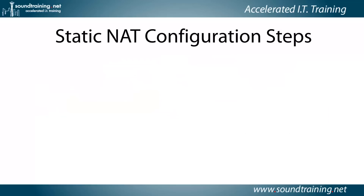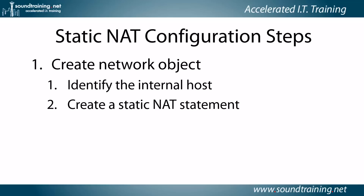There are three steps for configuring static NAT. The first one is to create a network object. Within this network object, you'll identify the internal host — the web server — and you'll create a static NAT statement to tell the ASA to forward port 80 traffic from the outside interface to the web server on the inside.